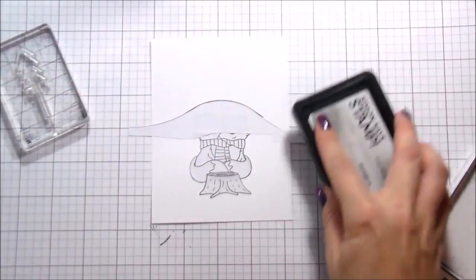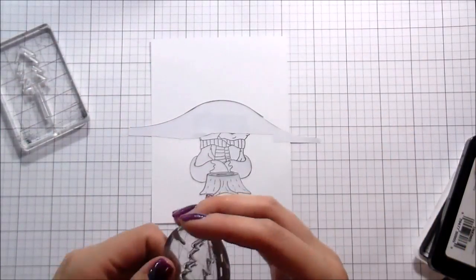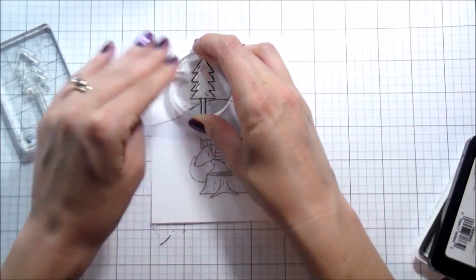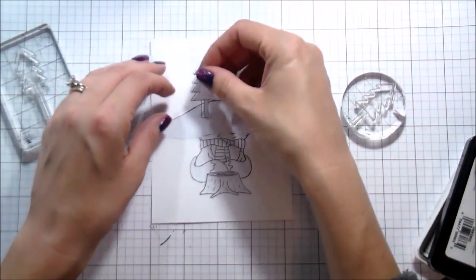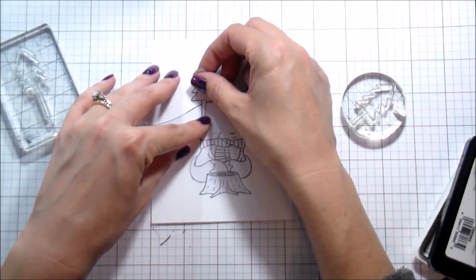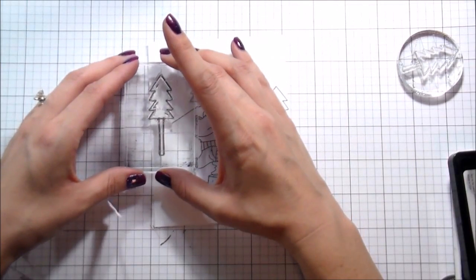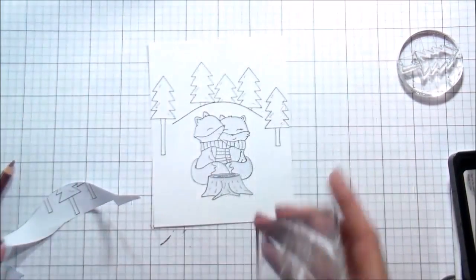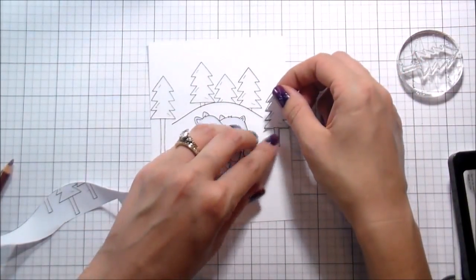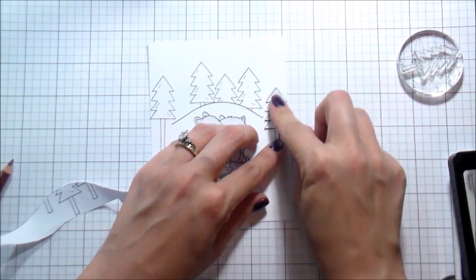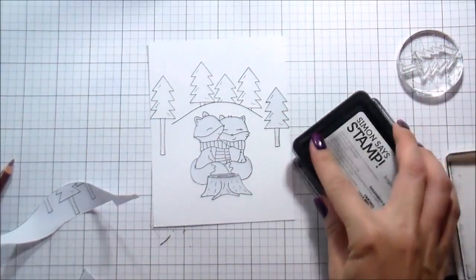So there's also pine trees in that Lumberjack Love set, two different sizes, and so I picked out a couple of those, and I'm just going to stamp them, and I am kind of masking as I go. I did remove the hill mask to stamp some of the trees in front, so it gave us just a little bit of depth perception, so it didn't look just flat.